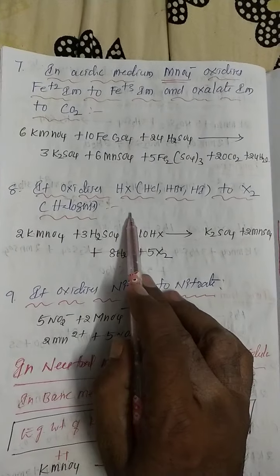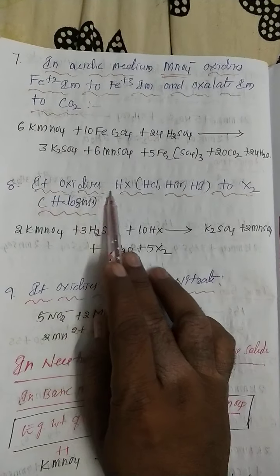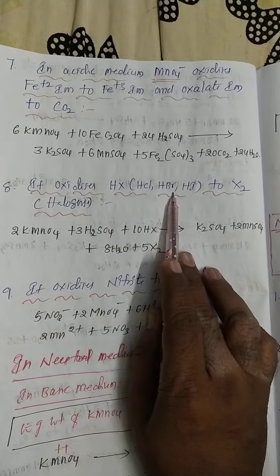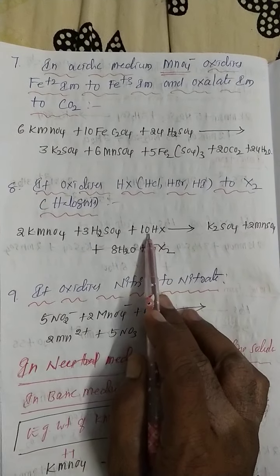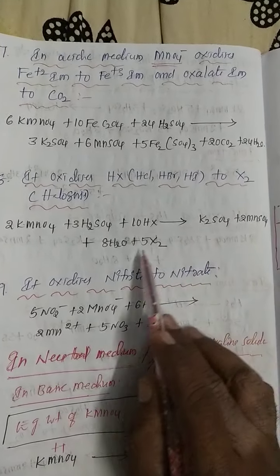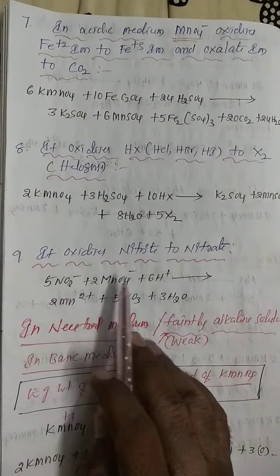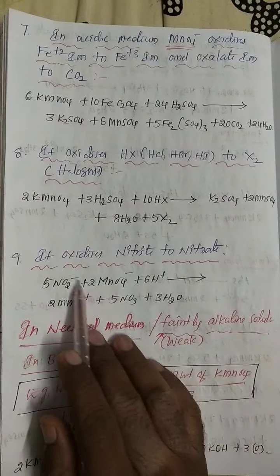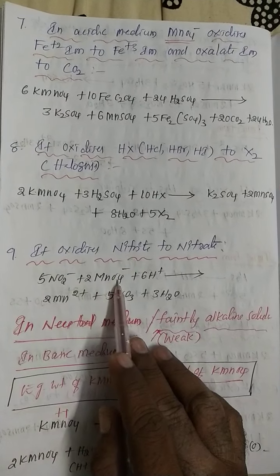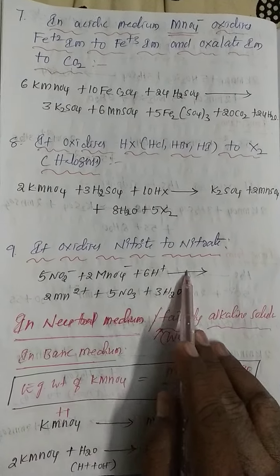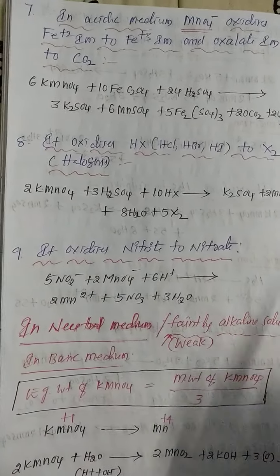KMnO4 also oxidizes hydrogen halides — HCl, HBr, and HI only, not HF — to halogens. In the presence of sulfuric acid, hydrogen halides are converted to halogens (5X₂). Additionally, KMnO4 oxidizes nitrite to nitrate: 5NO₂⁻ plus 2KMnO₄ plus 6H⁺ gives the conversion of nitrite to nitrate.